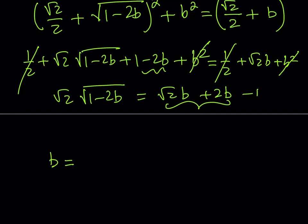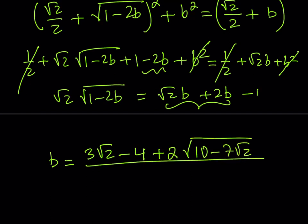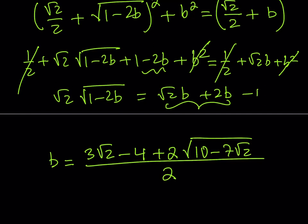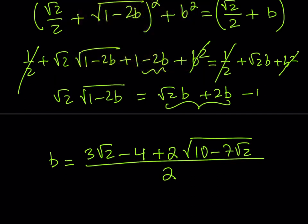you're going to get the following b value. It's 3 root 2 minus 4 plus 2 times the square root of 10 minus 7 root 2, all over 2. That's a mouthful. This brings us to the end of this video.